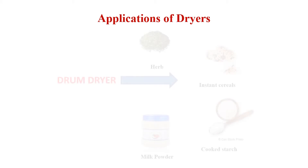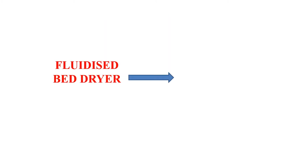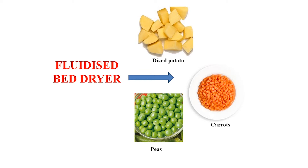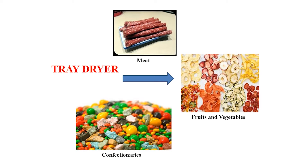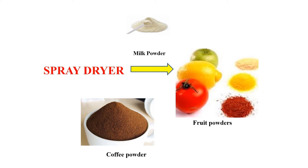The applications of dryers are as follows. The drum dryer is used to dry herbs, instant cereals, cooked starch, and milk products. The fluidized bed dryer is used for drying diced vegetables, grain, and peas. The tray dryer is used to dry fruits, vegetables, meat, and confectionery. The spray dryer is used for milk, cream, coffee, tea, and juices. The selection of a dryer is based on the nature of the material to be dried, the time, and the cost of drying.